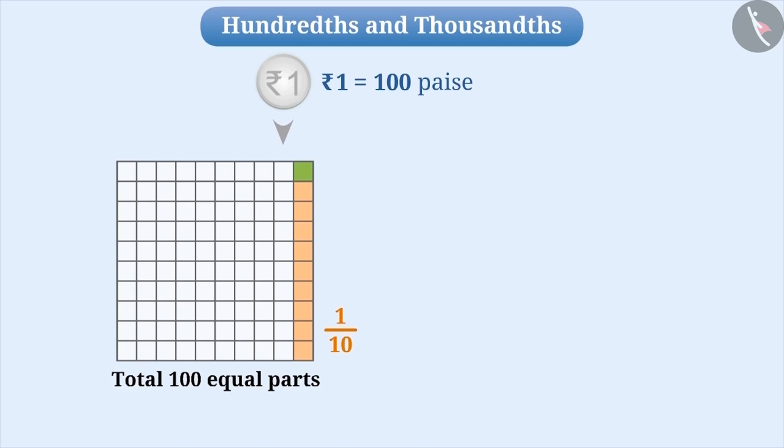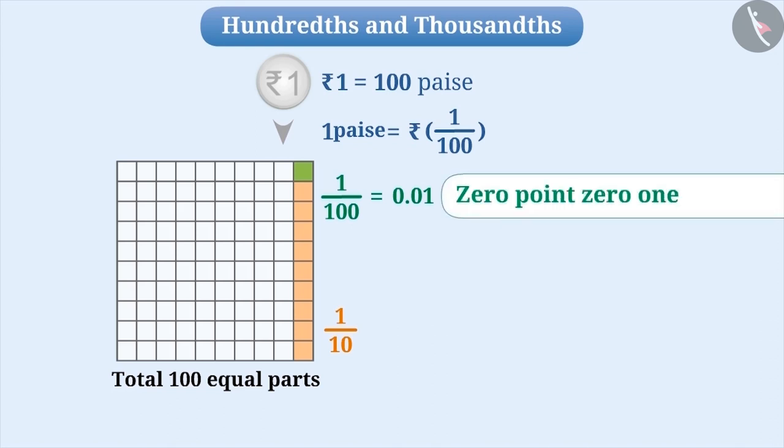If we talk about one part, this will be the one-hundredth part of a whole square. That means, 1 paise is a hundredth part of 1 rupee. This is a fraction whose numerator is 1 and the denominator is 100. A fraction with denominator 100 can be written in decimal form. One-hundredth can be written like this. We read it as 0.01.